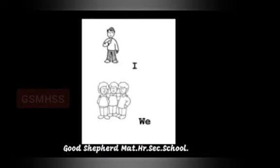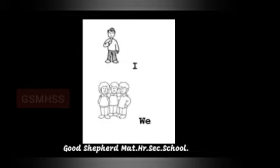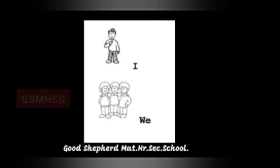We use 'I' to tell about ourselves. For example: my name is Priya, I am studying fourth standard in Good Shepherd School, I like to draw. In the first sentence I mention my name, and in the rest of the sentences I use the pronoun 'I'.